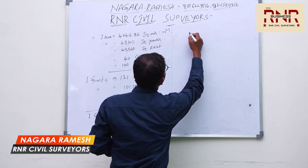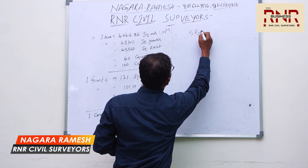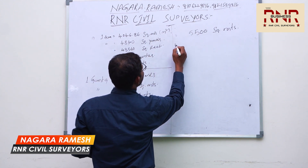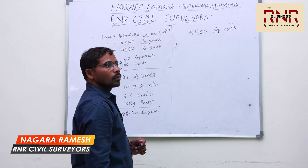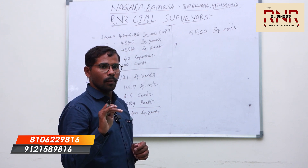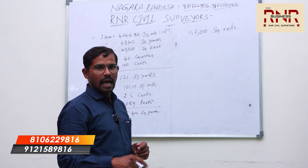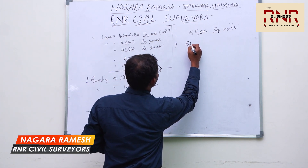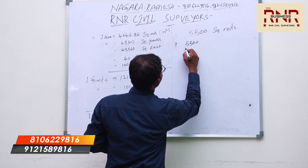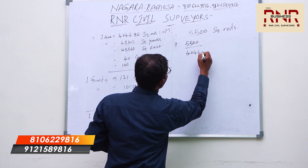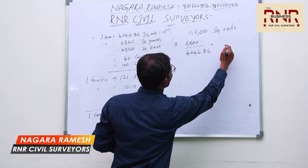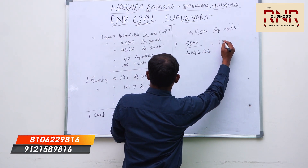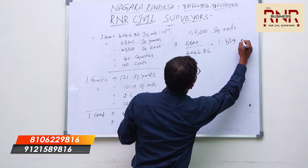For example, if you have an area of 5,500 square meters, you can get the conversions. The result here is 1.359 acres.